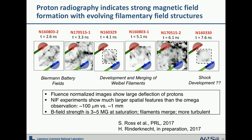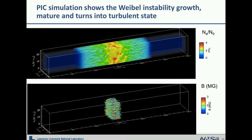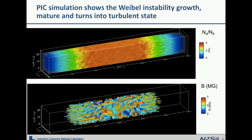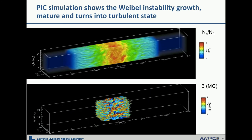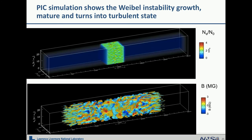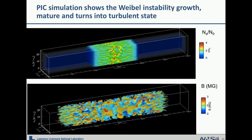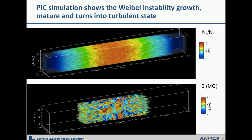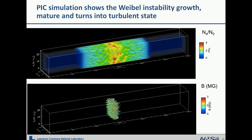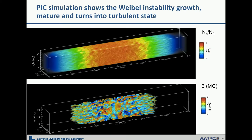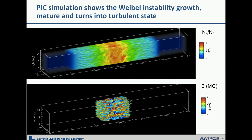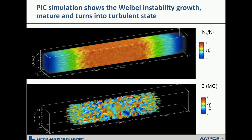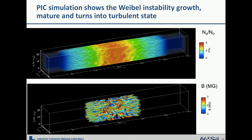We have a couple of papers published and one in preparation. We think the B-field strength is about 3 to 5 megagauss at saturation, and at the end the filaments probably merge and the shock is formed. This is a 3D particle-in-cell simulation using two plasma flows coming from each end, with plasma density and velocity taken from experimental measurements. The top shows the plasma density plot as a ratio over the initial density, and the bottom shows the magnetic field generated by the two plasma-plasma flow interactions. The shock is being formed at about three to four times the initial density, and the magnetic field develops from an initially vibrant pattern into a more turbulent regime.